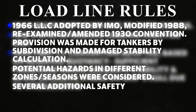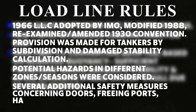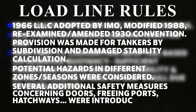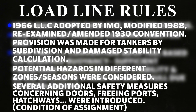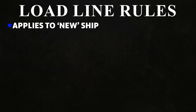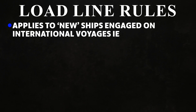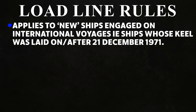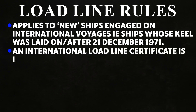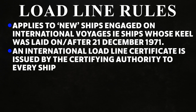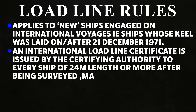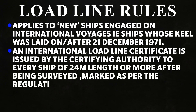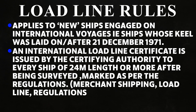Several additional safety measures concerning doors, freeing ports, and hatchways were introduced. Conditions of assignment apply to new ships engaged on international voyages — i.e., ships whose keel was laid on or after December 21, 1971. An International Load Line Certificate is issued by the certifying authority to every ship of 24 meters length or more after being surveyed and marked as per the regulations.